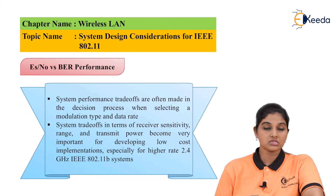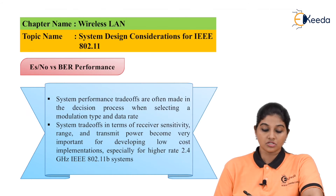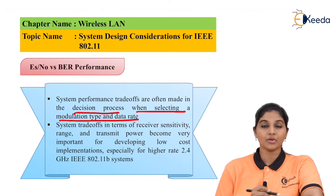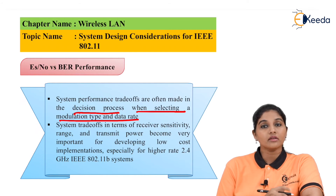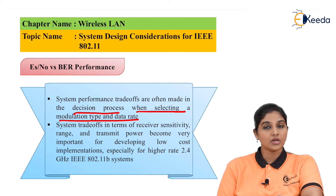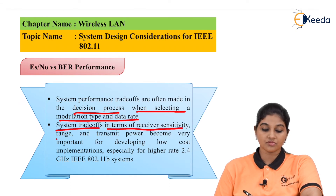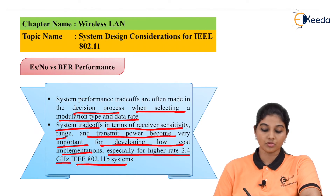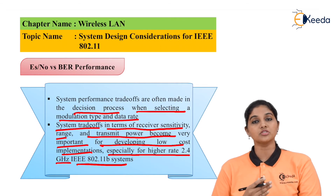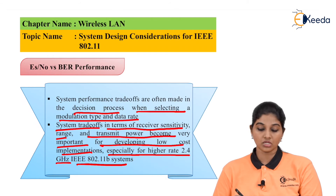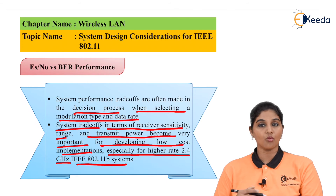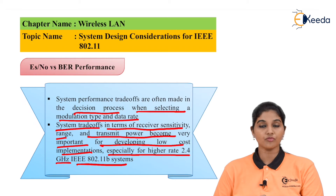The next parameter is Es/No versus BER performance. System performance depends on the decision process when selecting a modulation type and data rate. For 10 Mbps data rates, FHSS can be used; for 11 Mbps or 20 Mbps, DSSS (direct sequence spread spectrum) is required. System trade-offs in terms of receiver sensitivity, range, and transmitted power are very important for developing low-cost implementations, especially for higher-rate 2.4 GHz IEEE 802.11b systems.